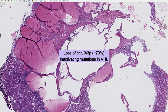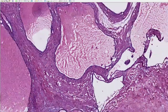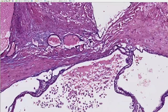On the molecular level, MCRNLMP shows alterations of the VHL gene, similar to CCRCC. It may occur in a sporadic setting or in von Hippel-Lindau syndrome. In most instances there is complete loss of chromosome 3; sometimes only the short arm (3p) is lost, where the VHL gene locus resides. In a minority of cases, only inactivating mutations of the VHL gene are identified by FISH analysis.